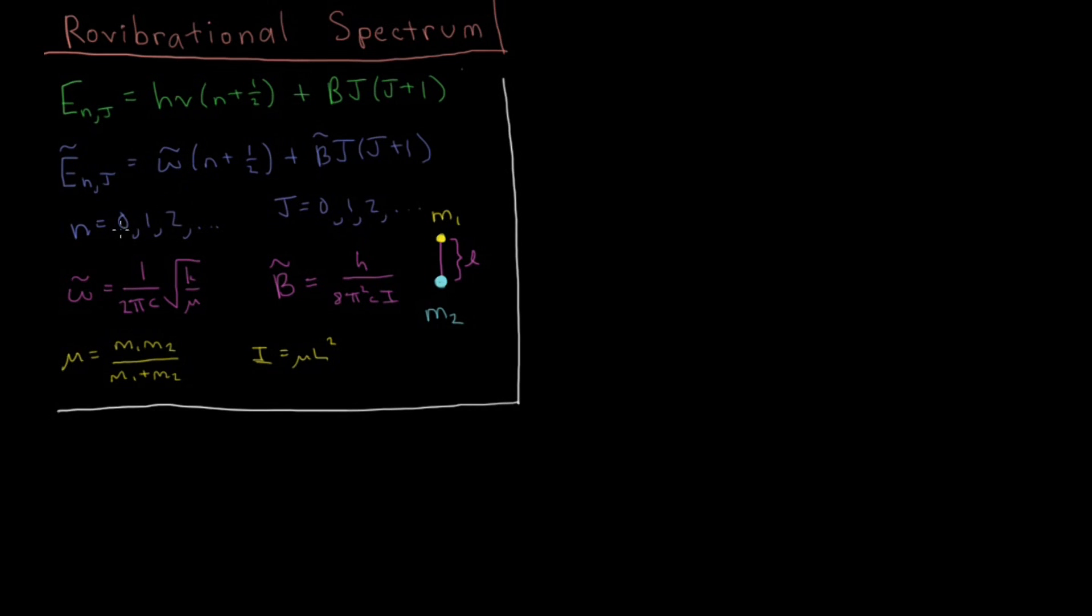Just as a reminder, these quantum numbers n start from 0 and are integers above that, j start from 0 and are integers above that, non-negative integers.